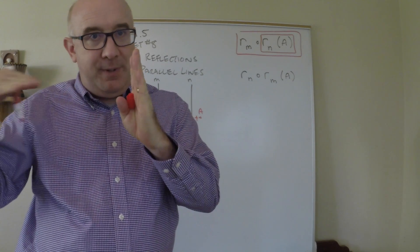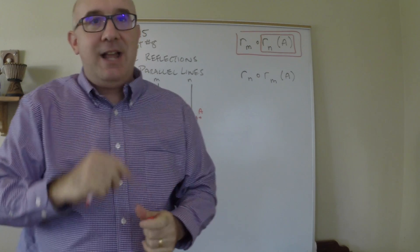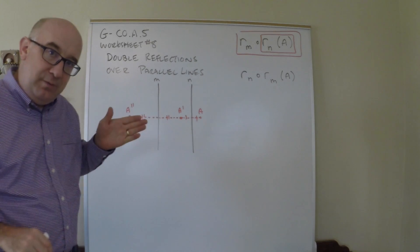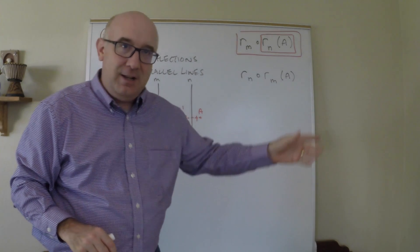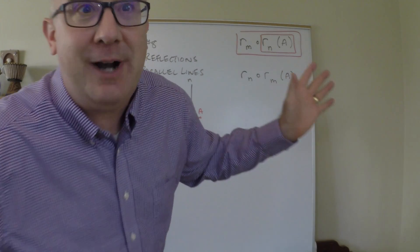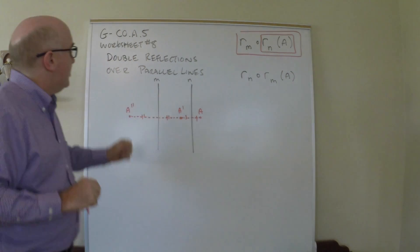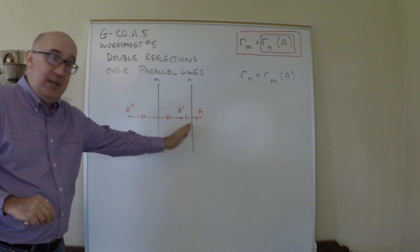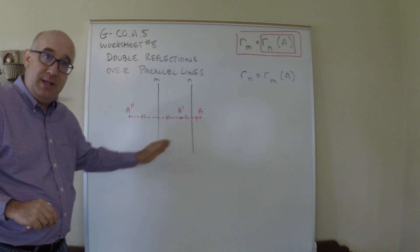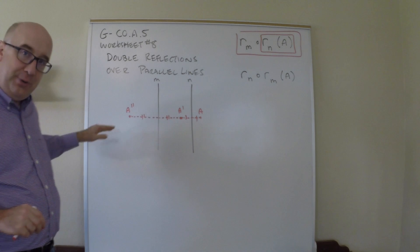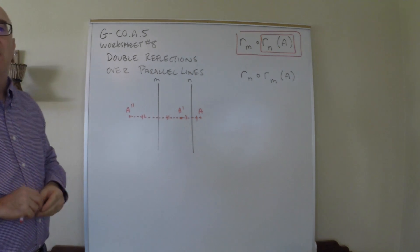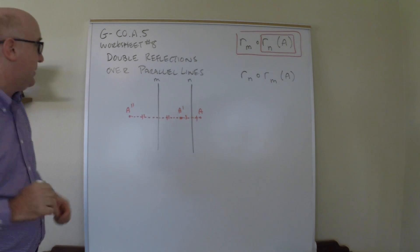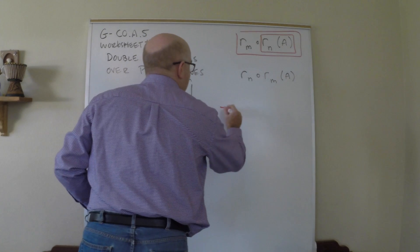Now a couple things to notice: because the lines are parallel, a reflection moves in a perpendicular distance, so this will continue to move in a straight line — a translation. Because we're perpendicular to both lines, we move in a straight line or direction. What's coming is a translation.